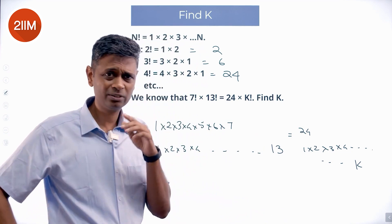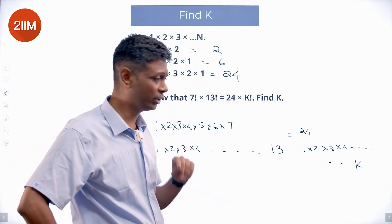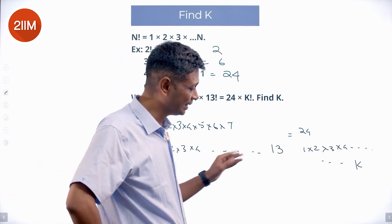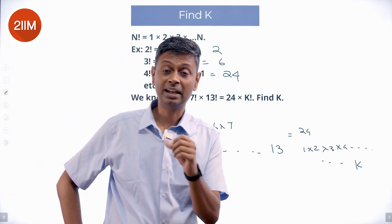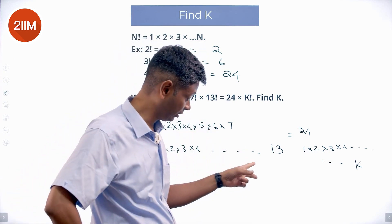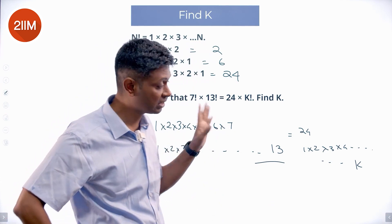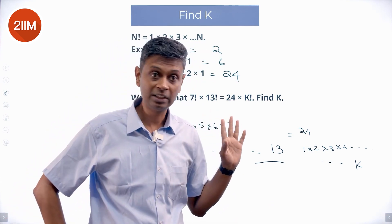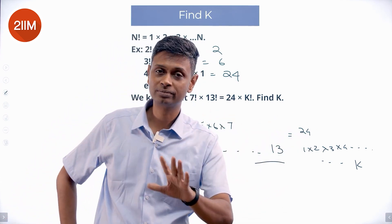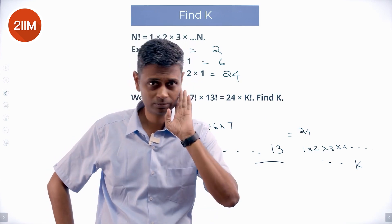That doesn't work because if I put k equal to 10, I cancel everything up to 10, but then 11, 12, 13 are still remaining on the 13 factorial side, and 1 through 7 are remaining on the 7 factorial side. On the right side there is only 24. So k equal to 10 will not work.